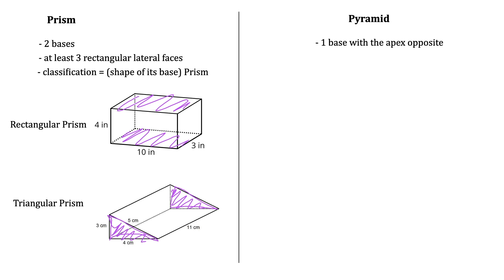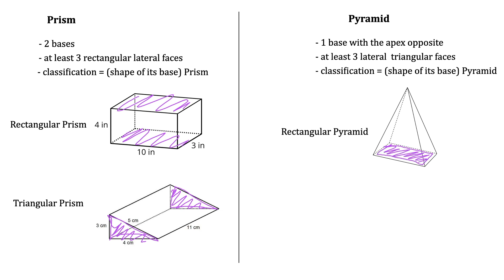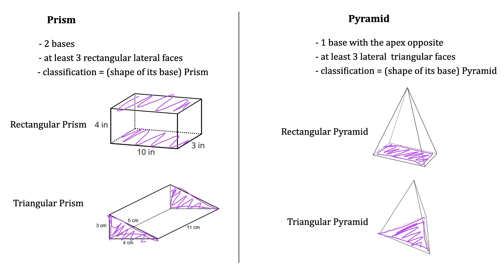The other common type is a pyramid, which has one base with an apex on the opposite side and at least three lateral triangular faces. A rectangular pyramid has a rectangle as the base and four triangular lateral faces. A triangular pyramid has a triangle as the base, all other faces are still triangles as lateral faces, and there's that apex on top.